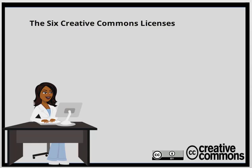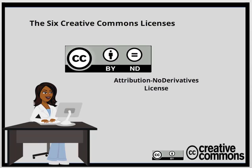The next license is the attribution no derivatives, or CC BY-ND. This means the work cannot be changed — it has to be the same work to be utilized, whether commercially or non-commercially, as long as attribution is given to the creator. The icon looks like an equal sign for no derivatives.